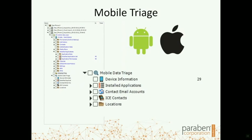When we look at mobile triage associated with the E3 platform, this triage functionality is available with both Android and iOS. It gives you the basic device information and tells you all the installed applications associated with the device — that's very important since the majority of users and suspects spend 80% of their time in an installed application.